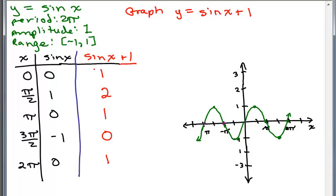So notice the y values for these x values, we have the same x values but the y values, the y coordinates are all shifted up 1. They're 1 more than they were for y equals sine of x.